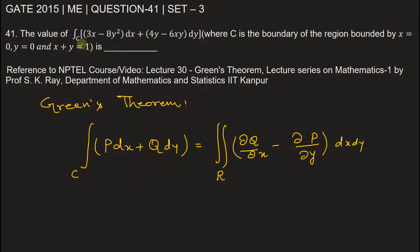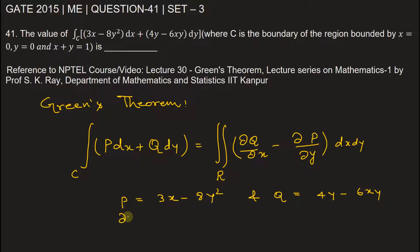According to the problem, P is equal to 3x minus 8y squared and Q is equal to 4y minus 6xy. Now, the partial derivative of P with respect to y will be 0 for the first term and negative 16y for the second. And the partial derivative of Q with respect to x will be negative 6y.